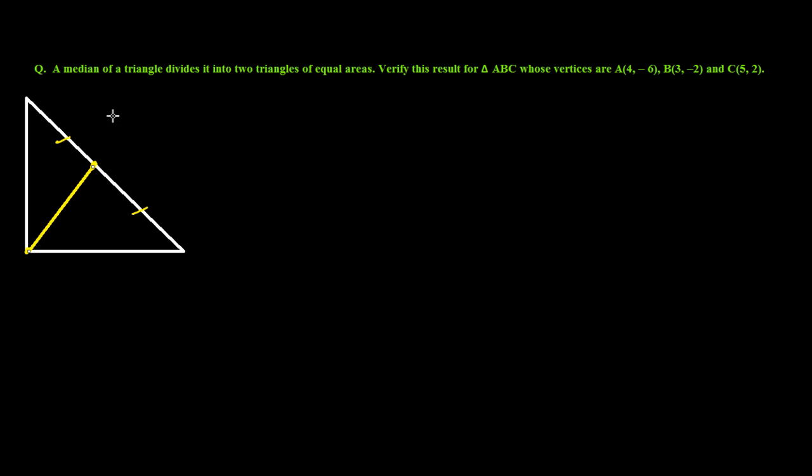Here, let me see. This is A, this is B, this is C, and this is M. So here, median AM is dividing this triangle ABC into two equal triangles or not, that we need to verify. If yes, then okay, let's show it.